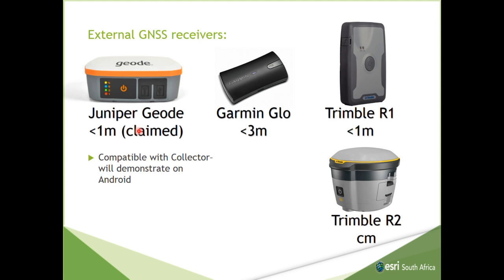The Juniper Geode is a device that was launched last month. It will come in L1 and L2 flavor, and it has a claimed sub-meter accuracy. I had a test device and couldn't get it to that accuracy, but when the proper device comes out, I'll test it again. You can connect it to RTK systems and your trig nets, and then you should get sub-meter accuracy. The Trimble R1 is sub-meter and the Trimble R2 is quite a big device — you prefer to pole mount it. That's how you do your fieldwork.